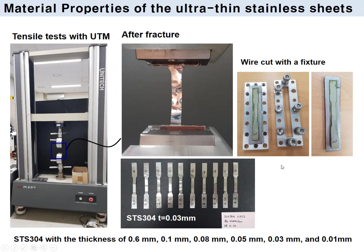Our research team employed ultra-thin stainless steel sheets in the sheet incremental forming process. In the tests, we employed thicknesses of 0.6, 0.1, 0.08, 0.05, 0.03, and 0.01 mm. We conducted the tensile test using a universal testing machine. The material was stainless steel 304. The specimen was cut through a wire EDM process with a fixture. Since the stainless steel sheet was very unstable after fracture, as seen in the figure, the material was fractured and very flexible. Thicknesses lower than 0.05 mm were difficult to handle due to their weight.